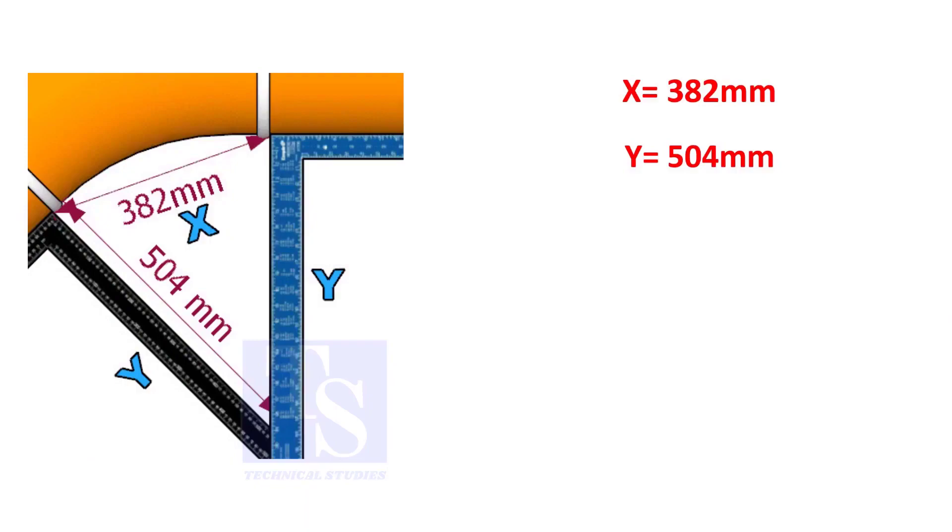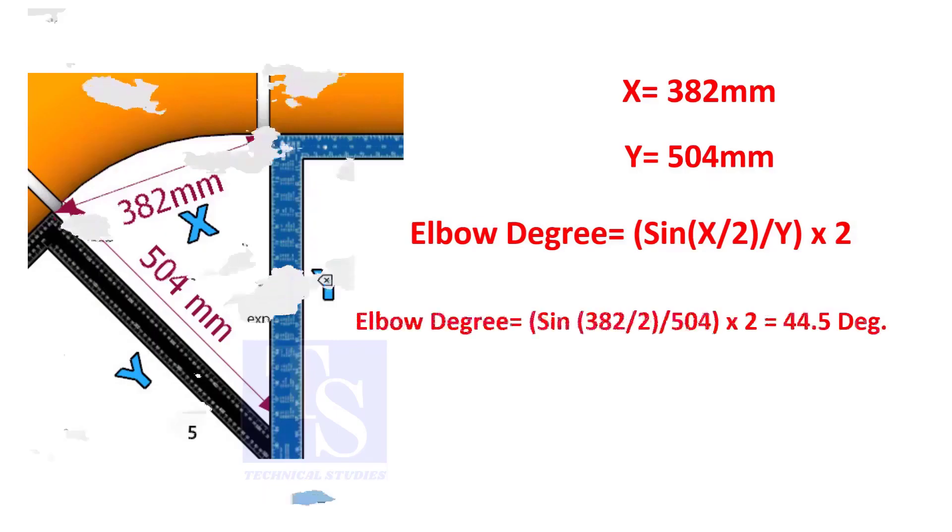Assume that the value of x is 382 and the value of y is 504. Divide the half value of 382 by 504 and convert the value to sine. Then multiply by 2.